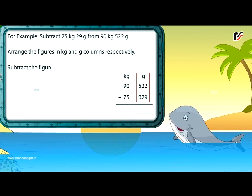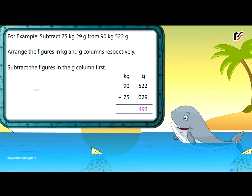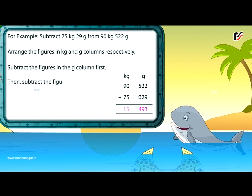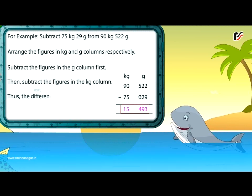Subtract the figures in the gram column first. Then subtract the figures in the kilogram column. Thus, the difference is 15 kg 493 grams.